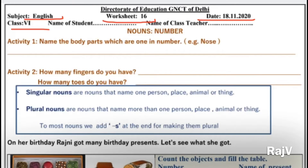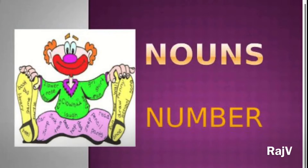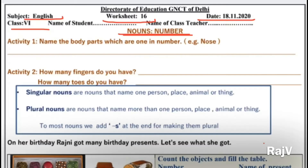If you could remember, in the last worksheet we did Gender under Nouns. Nouns mein humne gender change kiya tha. Jaisi ki Masculine and Feminine. Aur aaj hum karne wale hain usi ki under Number. Aur ye apne pehle kaafi baar apne previous classes mein kiya bhi hai. So first let's move on to the activity part.